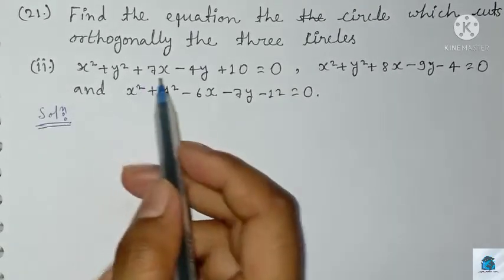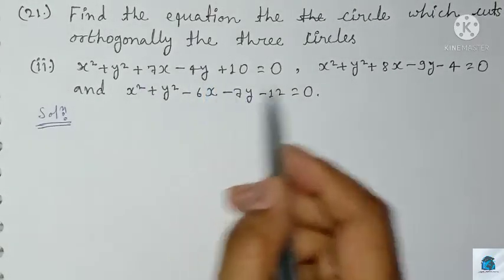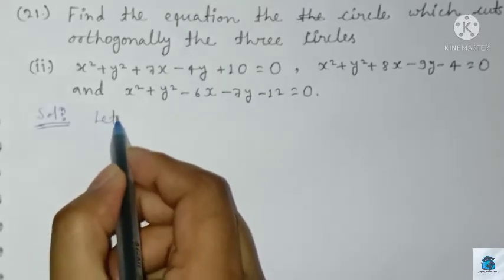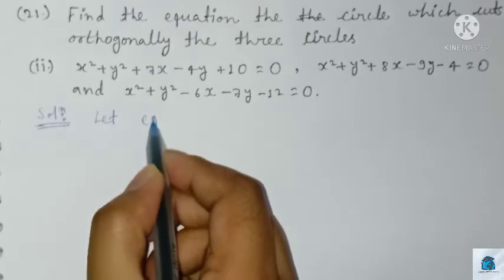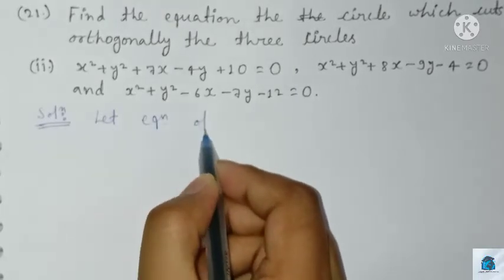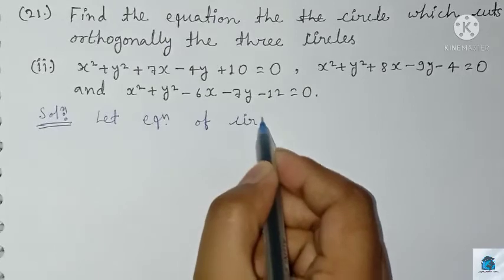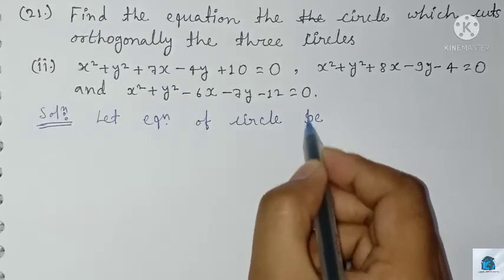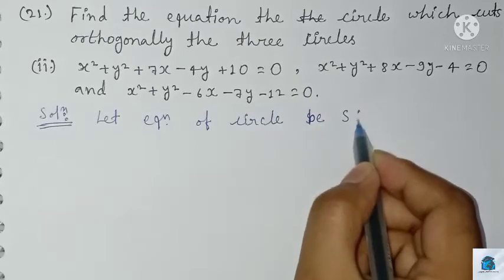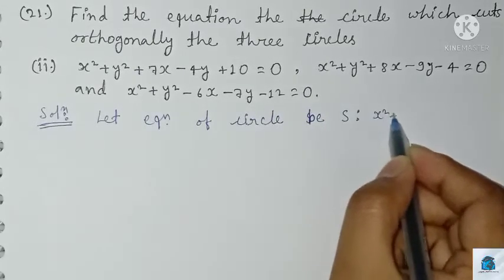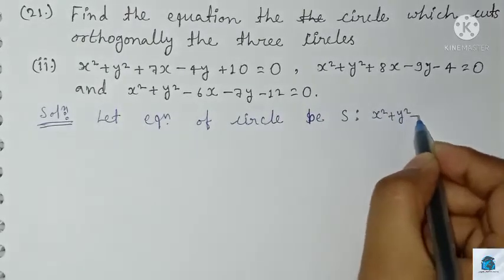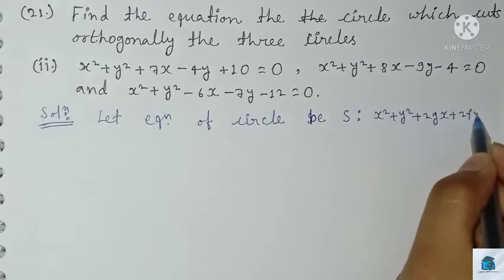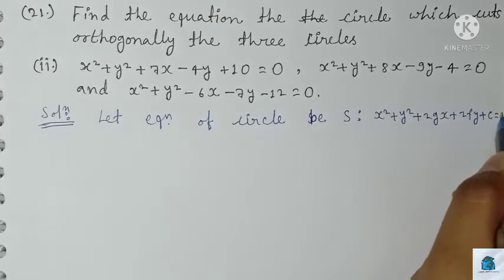We have to find the equation of the circle that cuts all three circles orthogonally. Let's assume the equation of the required circle S is x² + y² + 2gx + 2fy + c = 0.